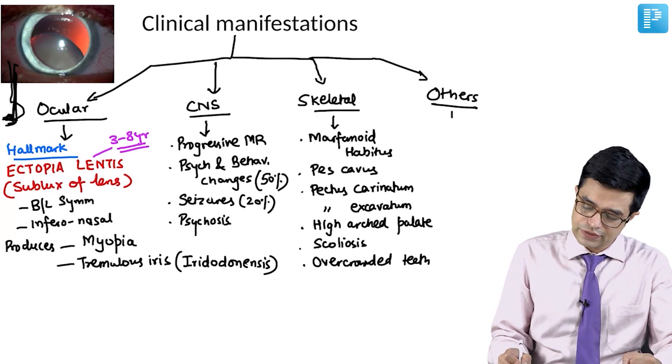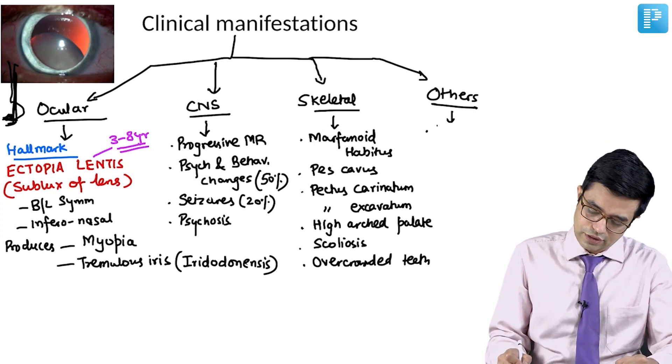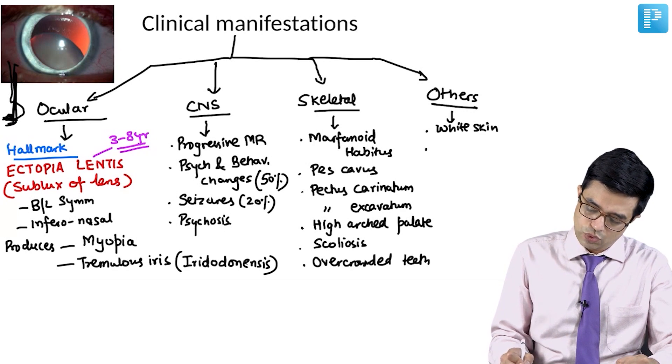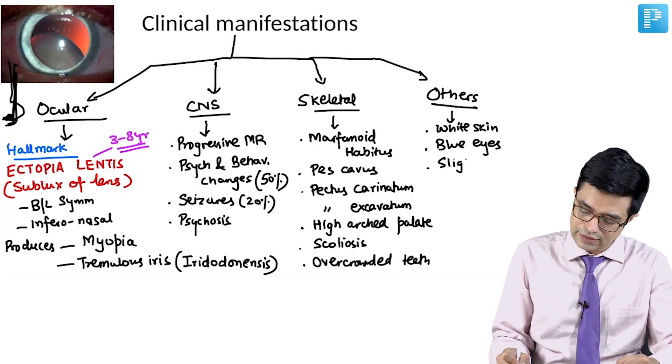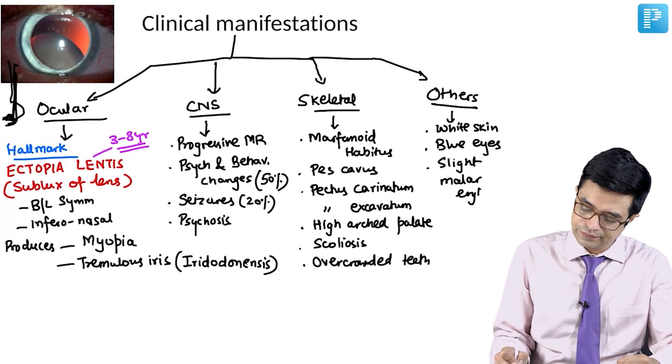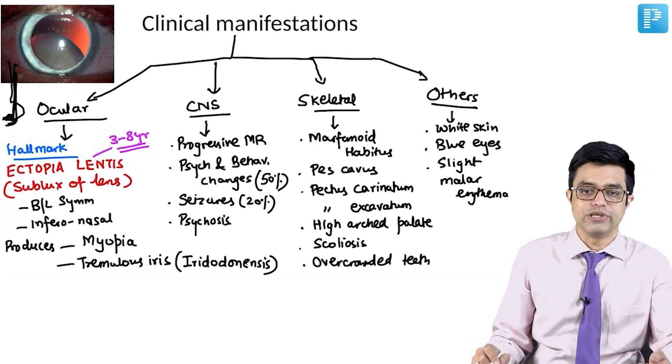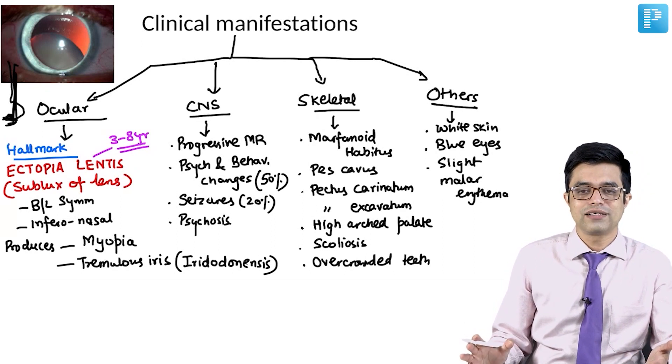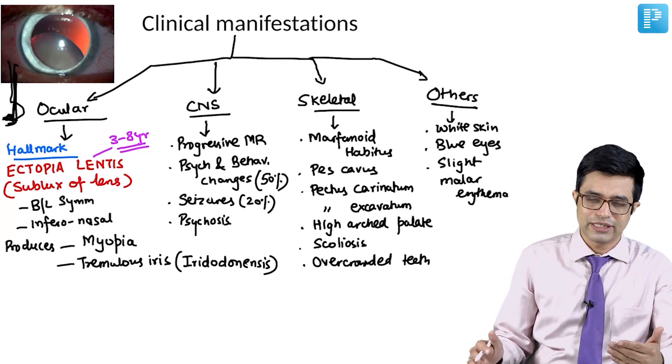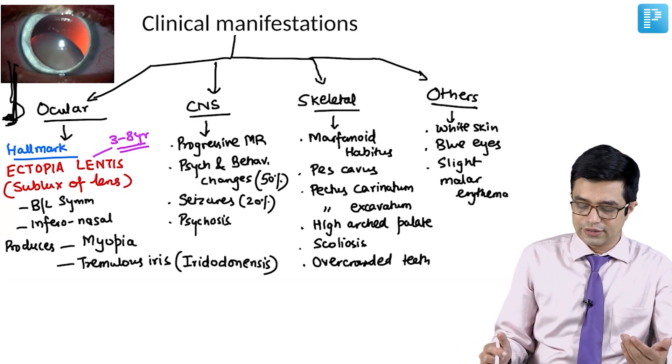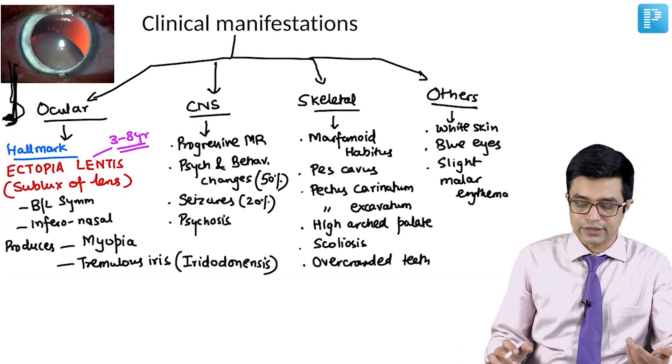The other manifestations, they may include white skin, so they have a very fair skin, blue eyes and typically they are found to have a slight malar rash or malar erythema in the cheek and nasal bridge region. These are the typical clinical manifestations, the four categories under which I have divided so that it is easy for you to remember and the hallmark are the ocular findings.